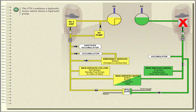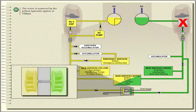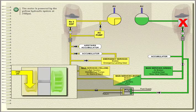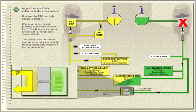The PTU combines a hydraulic motor which drives a hydraulic pump. The motor is powered by the yellow hydraulic system at 3,100 PSI. Output from the PTU is delivered to the green system.